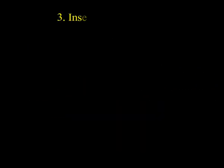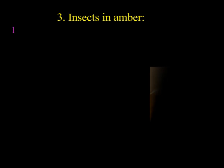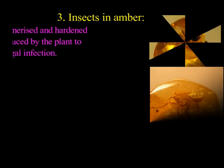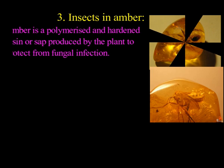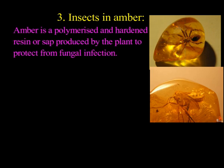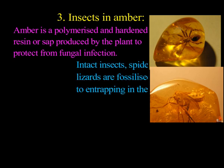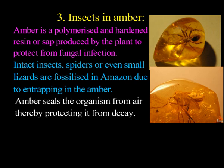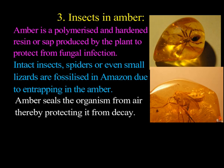The next process responsible for fossilization is insects in amber. Amber is a polymerized and hardened resin or sap produced by plants to protect from fungal infection. When intact insects, spiders, or even small lizards are trapped in amber, they become fossilized. Amber seals the organism from the air, and as a result, it gets protected from decay.